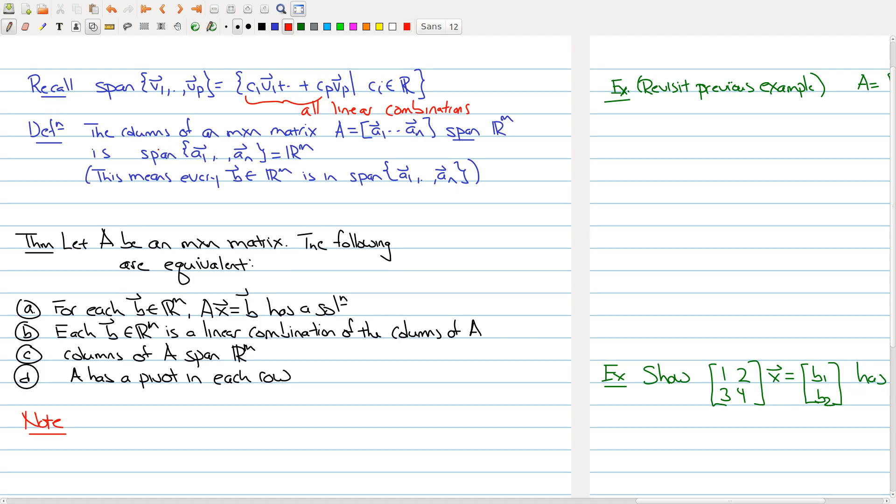Now we're going to use this terminology to talk about when the columns of a matrix span R^m. So for the columns of an M by N matrix - here's our matrix and these are our columns - we say that the columns span R^m means that when you take those columns A1 through An, you form the span like we do up here.